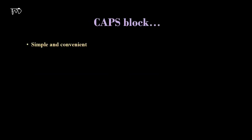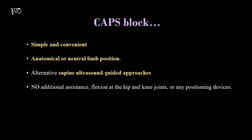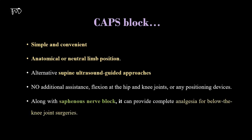CAPS block is simple and convenient for the patient as well as the anesthetist. It is performed in the anatomical or neutral limb position. It differs from the previously described supine ultrasound-guided approaches — it does not require additional assistance, flexion at hip or knee joints, or any positional devices. It can provide complete analgesia for below-knee surgeries when used along with saphenous nerve block.